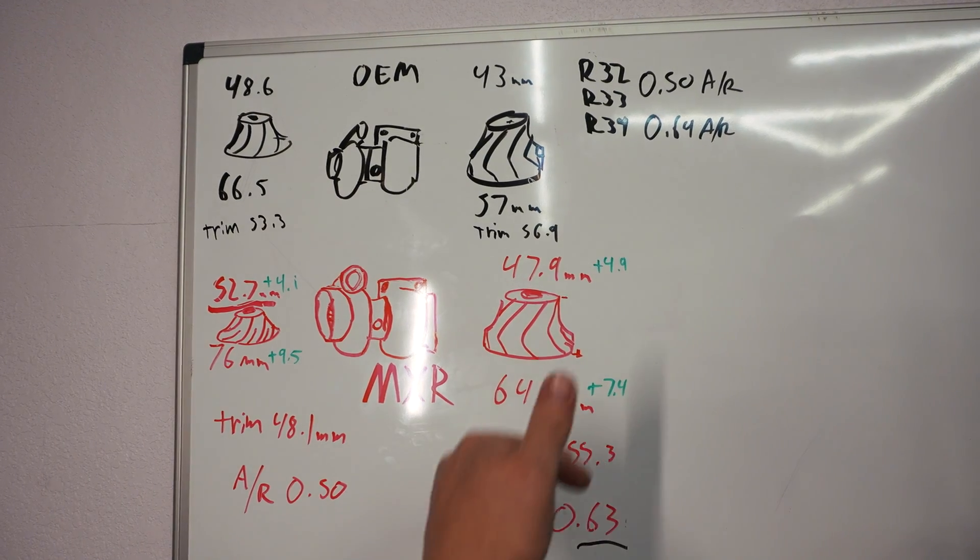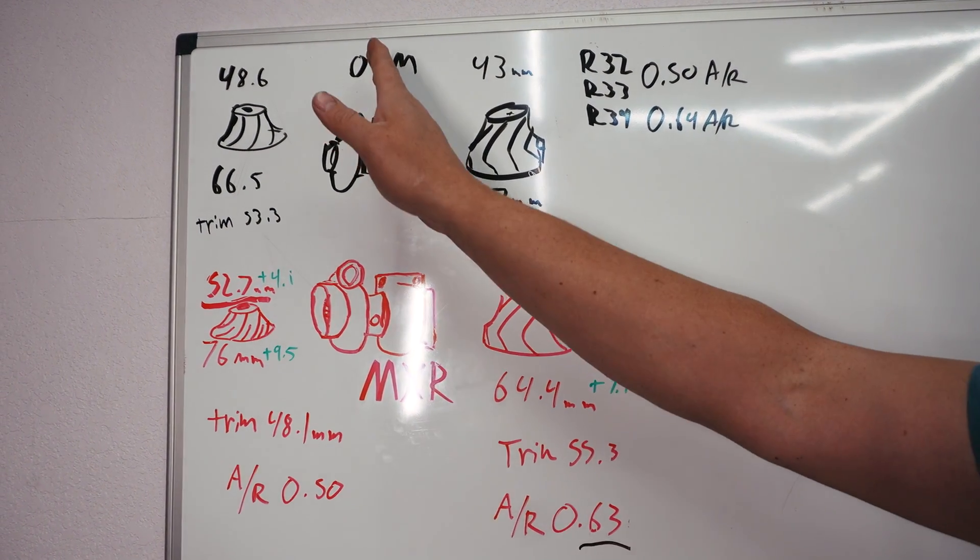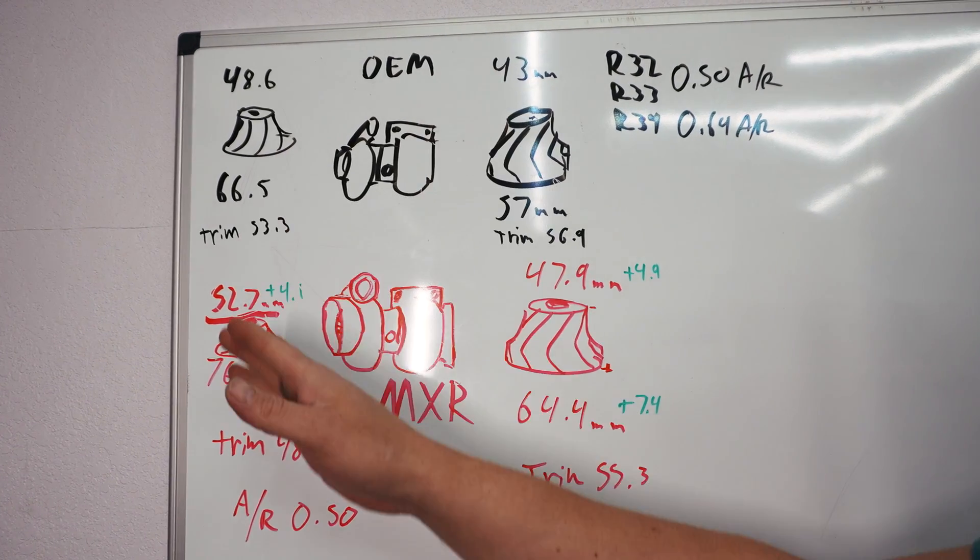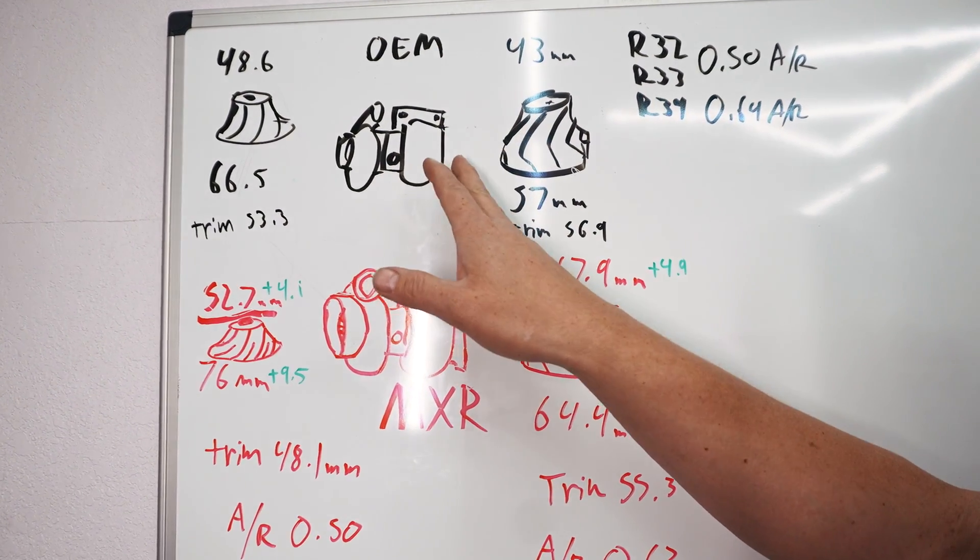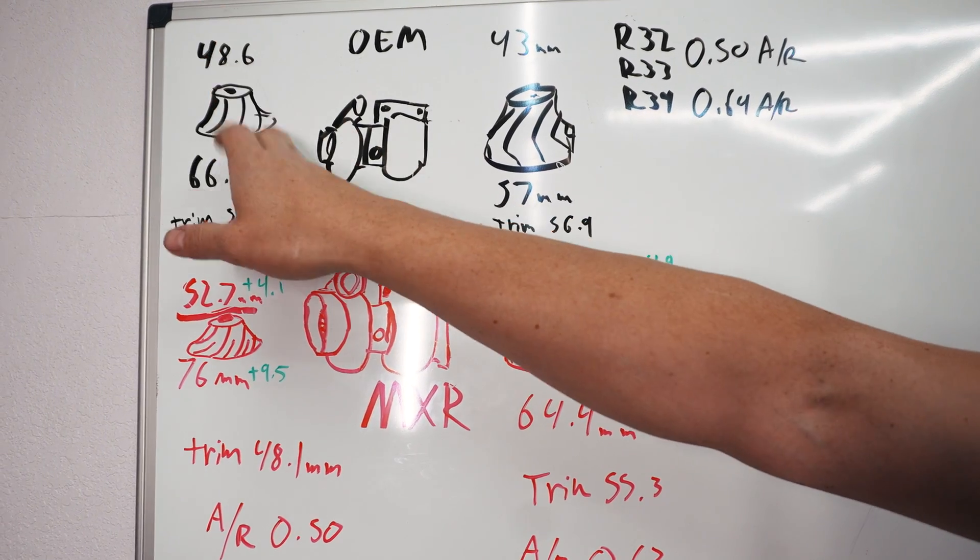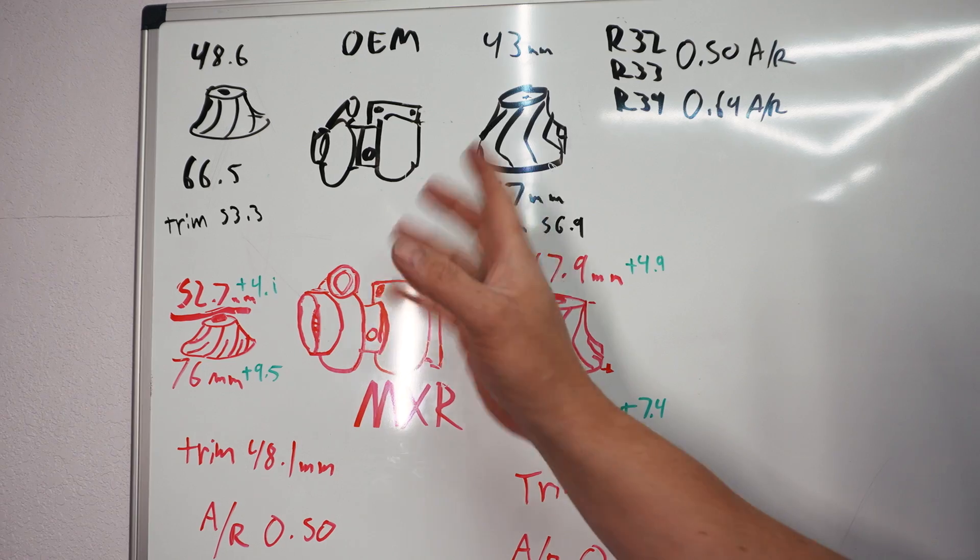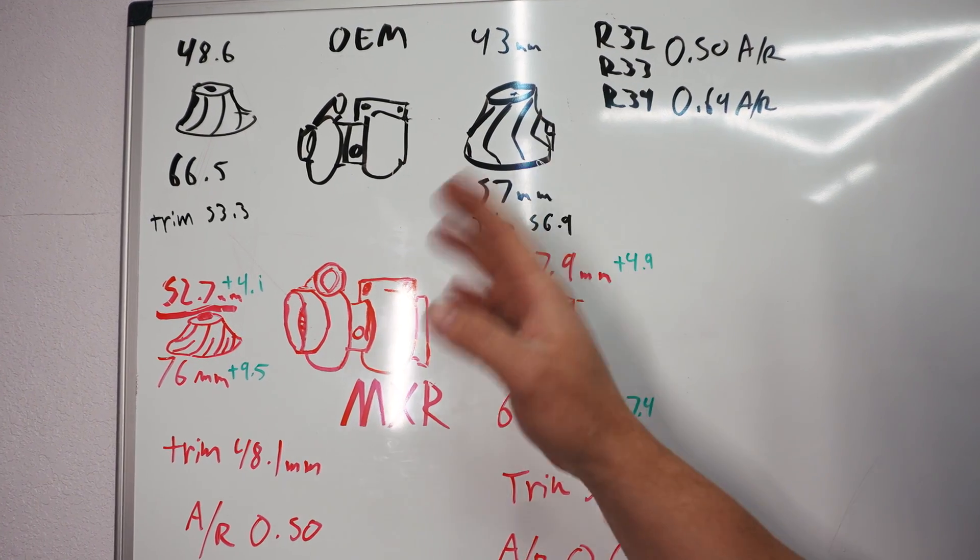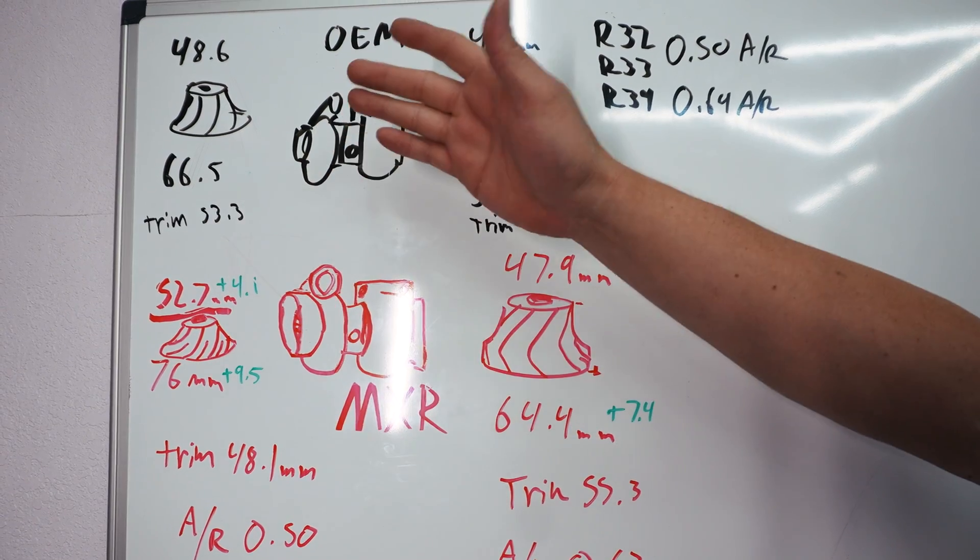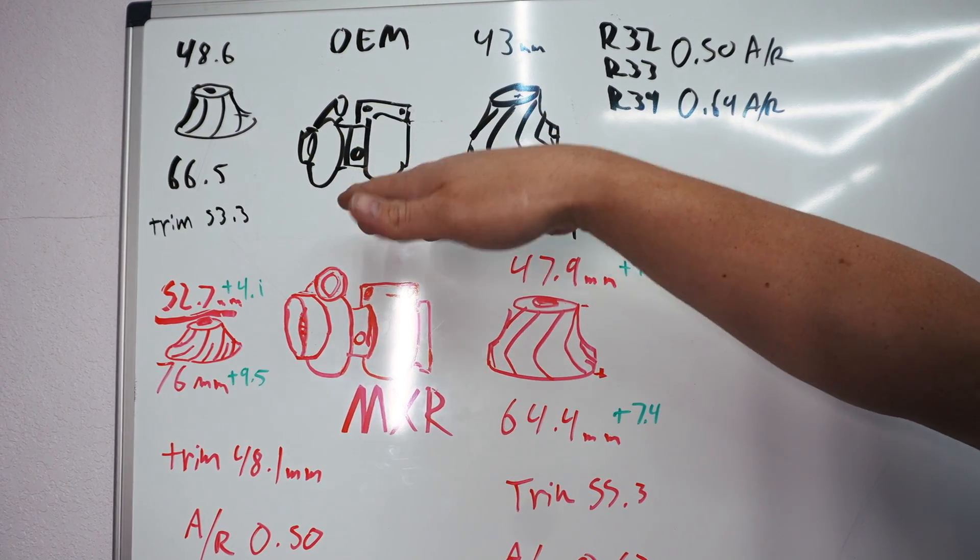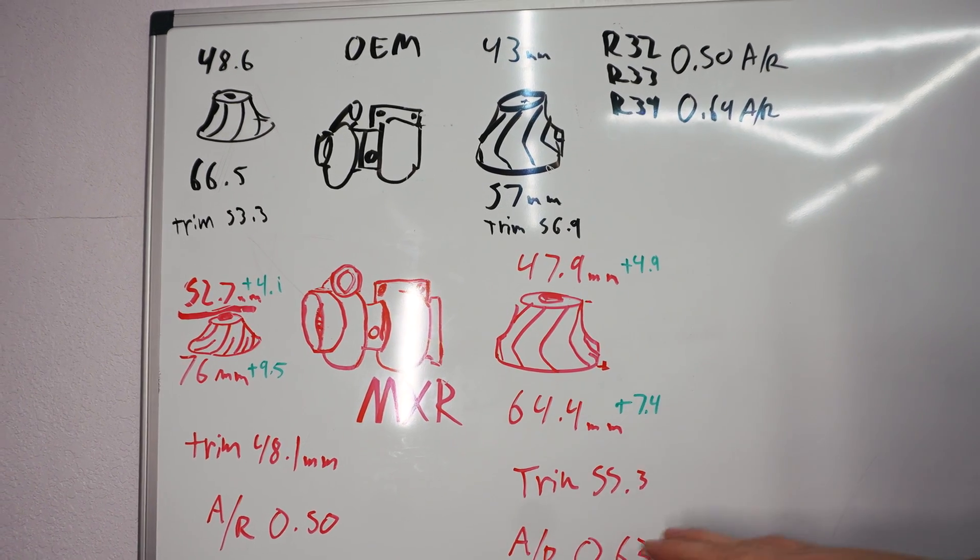Basically all turbos can be divided straight down the middle and you have your cold side and your hot side. The hot side consists of your turbine and turbine housing, the cold side consists of your compressor and compressor housing. The middle is a CHRA and this is the part that flows your coolant and oil and has your bearings in it. Both of these turbos are oil journal bearing turbos, so not ball bearing.